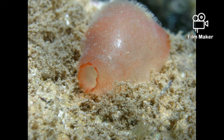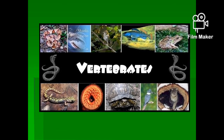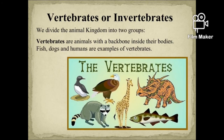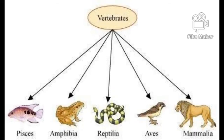The last phylum is Phylum Vertebrata. Vertebrates are animals that have a backbone or spinal cord. Examples are fishes, frogs, snakes, lions, and also humans. The vertebrates are classified into several types: first fishes, second amphibians, third reptilians, fourth aves, and fifth mammalia.